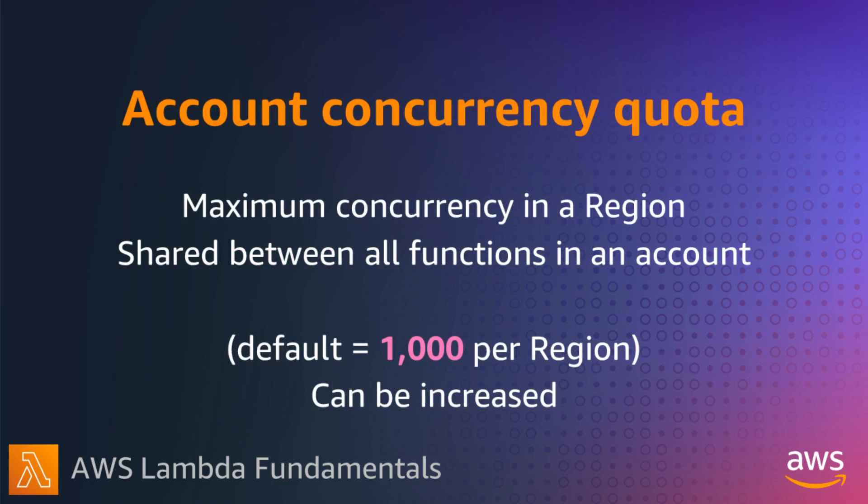There is also an account concurrency quota, which is the maximum concurrency that all functions share in an account in a particular region. This defaults at 1000 and can be easily raised, even to hundreds of thousands.